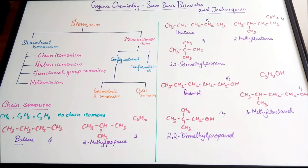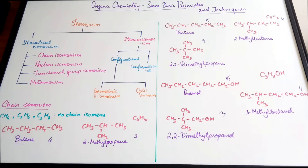So, in chain isomerism there is a difference in chain length. The compounds have the same molecular formula, but their IUPAC names will be different because there is a change in their chain length.